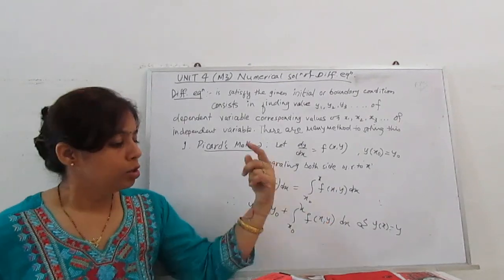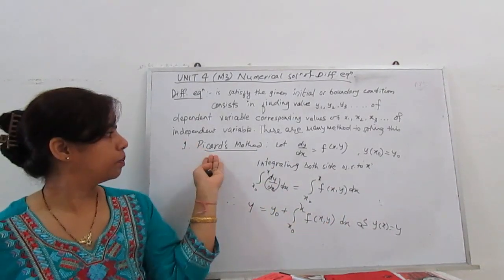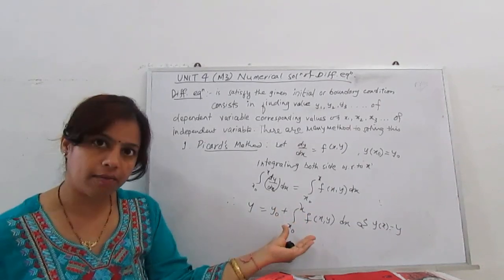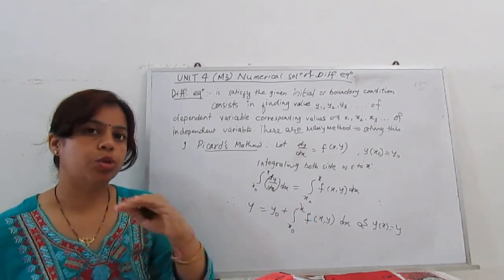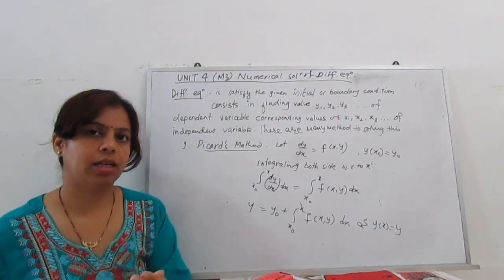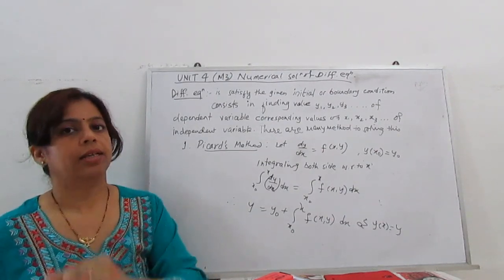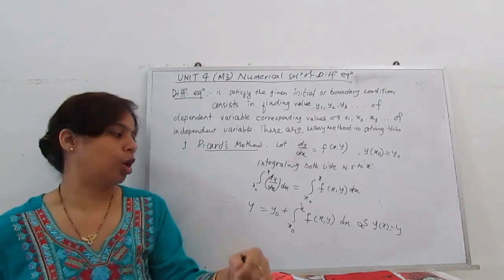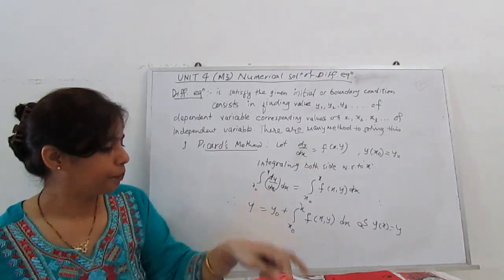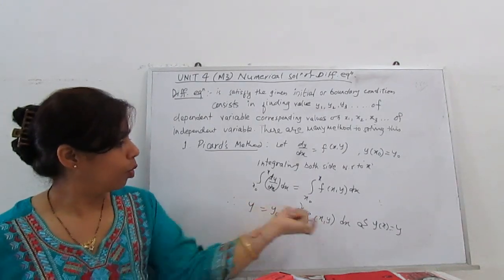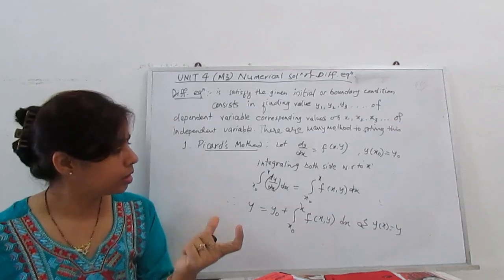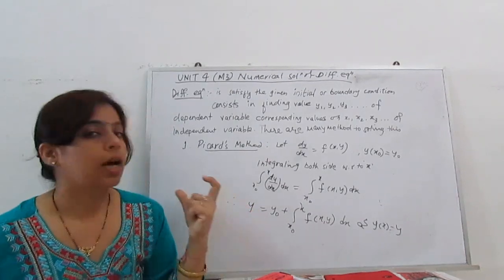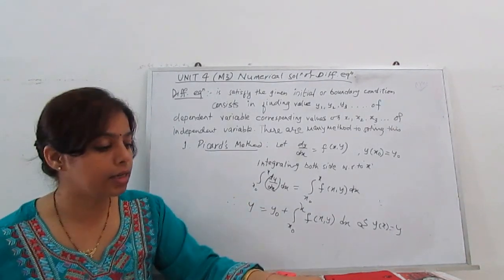So the equation becomes: y = y₀ + ∫(x₀ to x) f(x, y) dx. From this point, Picard's method uses iteration — we find one value, put it into the next equation, use that in the next integration, and so on. We note that the unknown y appears on both sides of this equation, so it is called an integral equation.